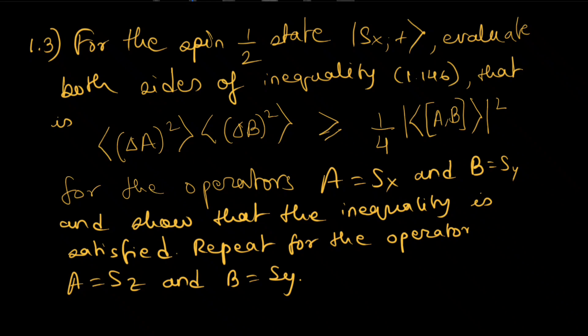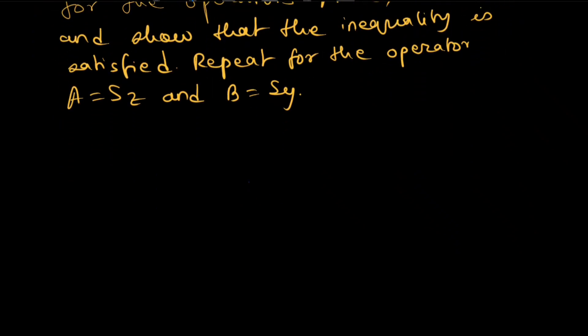The question we have been given today is: for the spin-half state |sx+⟩, evaluate both sides of inequality 1.146, that is ΔA² · ΔB² ≥ (1/4)|⟨[A,B]⟩|². For operators A = Sx and B = Sy, we have to show that the inequality is satisfied, and then repeat the exercise for A = Sz and B = Sy.